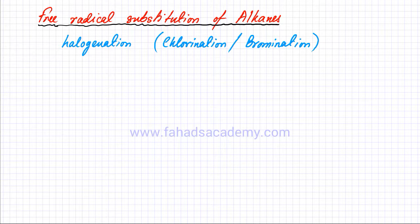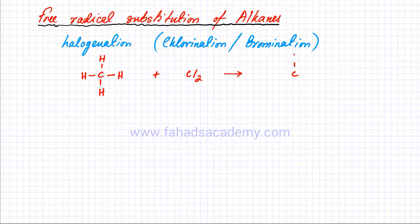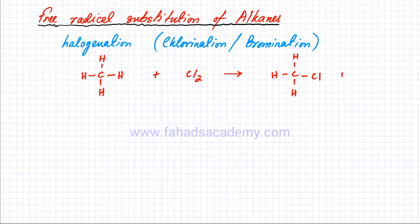I'm going to first write an overall reaction of what's going to happen. I'm going to take the simplest alkane — methane. CH4 is going to react with a chlorine molecule — I'm doing chlorination first; bromination is exactly the same. One of the hydrogen atoms gets substituted by a chlorine atom, and the hydrogen atom that is displaced bonds with the remaining Cl atom, so you get an HCl molecule. That's your overall equation for chlorination or halogenation.